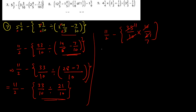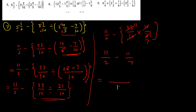So we get eleven upon 2 minus eleven upon 7. The LCM of 2 and 7 is 14. Two sevens are fourteen, seven into eleven is seventy-seven; seven twos are fourteen, two into eleven is twenty-two. So seventy-seven minus twenty-two is fifty-five, giving 55 upon 14 as your answer.